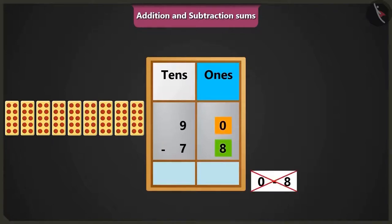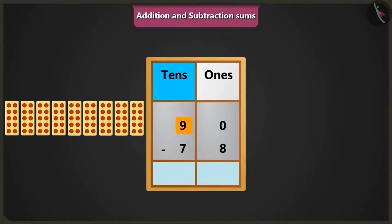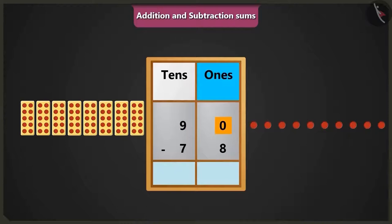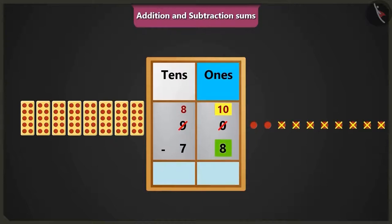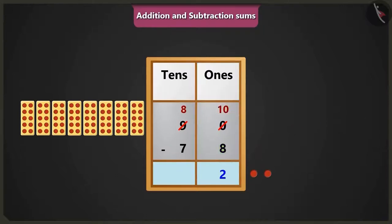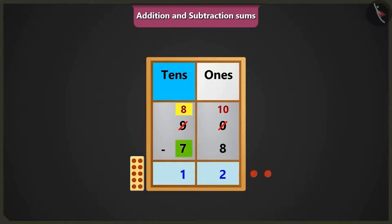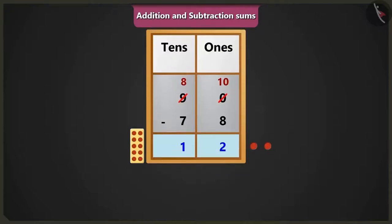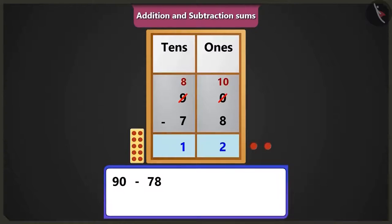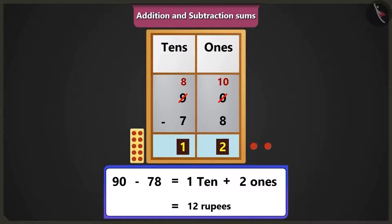First we do the subtraction of the ones box. Here we cannot subtract 8 from 0, so we borrow 1 ten from the 9 tens in the tens box. We write 10 ones in place of 0. Subtracting 8 ones from 10 ones leaves 2 ones. Then subtracting 7 tens from 8 tens leaves 1 ten. So 90 minus 78 equals 1 ten and 2 ones, meaning 12 rupees balance.